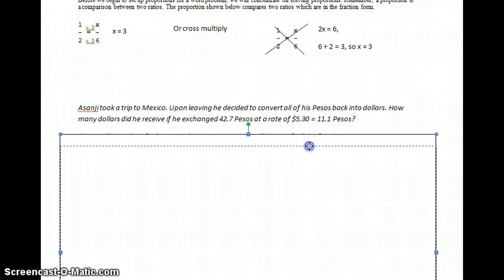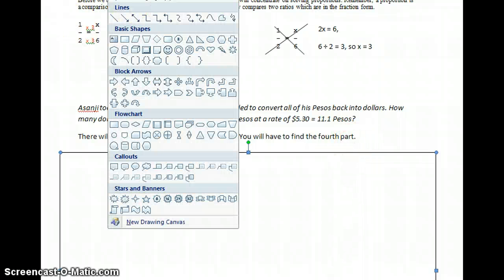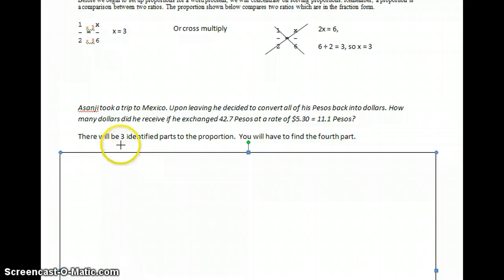Now, what you're doing when you're looking for three parts in this proportion word problem, three parts will be identified, and you'll have to find the fourth. So as I look at this, I go back and I can see, well,